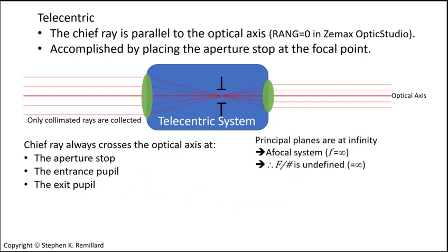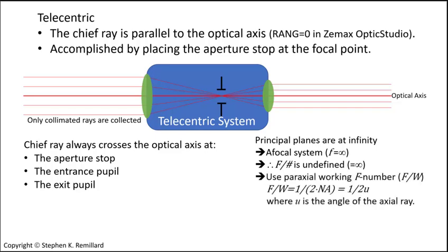Because principal planes are located at the point where incoming and outgoing rays intersect, both principal planes of a doubly telecentric system are also located at infinity, meaning that a doubly telecentric system is afocal, and the f-number isn't even a suitable metric for the system aperture. Instead, it is better to use the paraxial working f-number, which is inversely proportional to the numerical aperture, and depends on the location along the optical axis of an axial emitting point source. The ratio of numerical aperture on the object and image side is the paraxial magnification, or PMAG in Zemax OpticStudio.